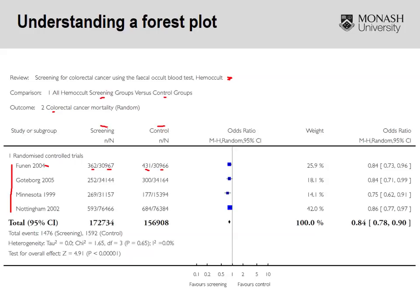For each of the studies, the results are reported graphically, or we can look at them numerically. The odds ratio for the first study is 0.84, with a confidence interval of 0.73 to 0.96. The confidence interval doesn't include 1, suggesting a statistically significant difference between screening and control groups in colorectal cancer mortality. The fact that it's less than 1 means it favours the screening group. You can also view this graphically — zooming in, you can see the odds ratio with its two confidence intervals.